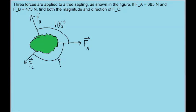In this problem, we have three different forces acting on a tree sapling, as shown in this diagram that I very crudely drew, and we want to find both the magnitude and direction of force C. So we want to find out how many newtons it is,